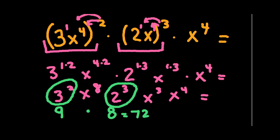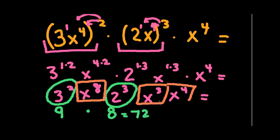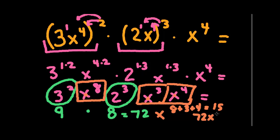Next we combine our x's. We have x to the 8th, x to the 3rd, and x to the 4th. They each have their own base, so we add the exponents: x to the 8 plus 3 plus 4. That's 8 plus 7 equals 15. So the final answer is 72x to the 15th.